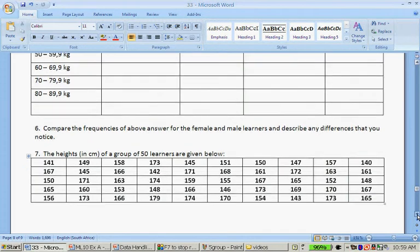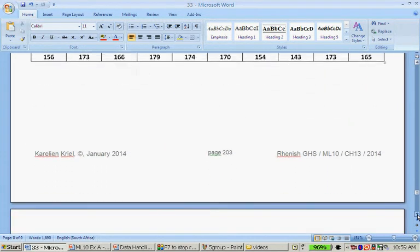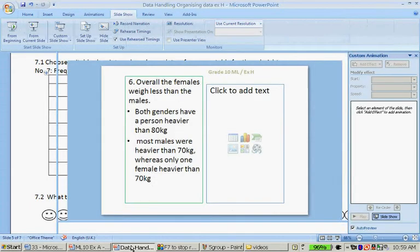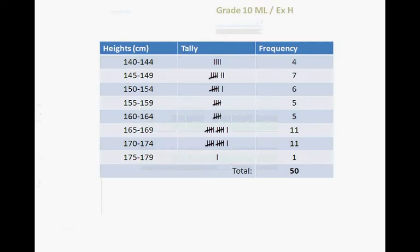The heights of a group of learners are given below. Choose suitable class intervals and complete the frequency table. Between 140-144, there were 4 learners. Between 145 and 149, 7 learners. 150 and 154, 6 learners. Between 155 and 159, 5 learners. 160 and 164, 5 learners. Between 165 and 169, 11. And between 170 and 174, 11. And only one taller.